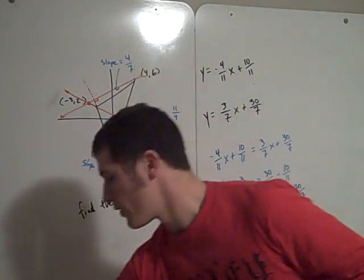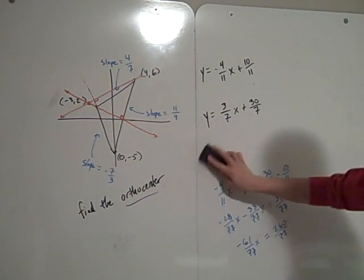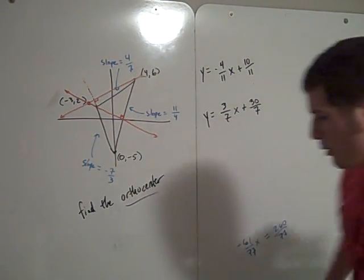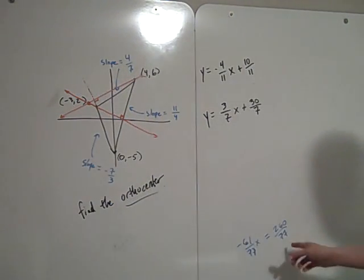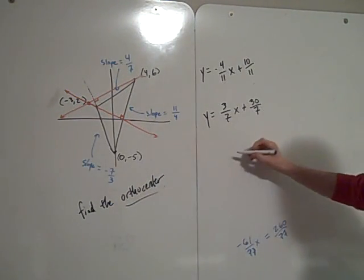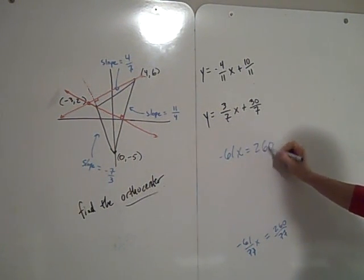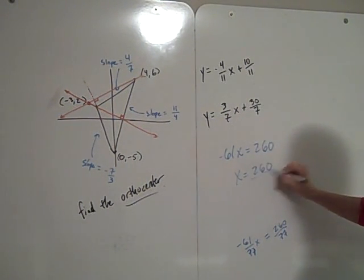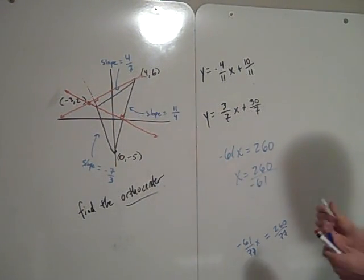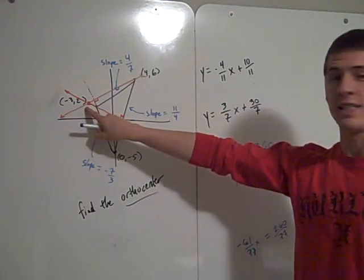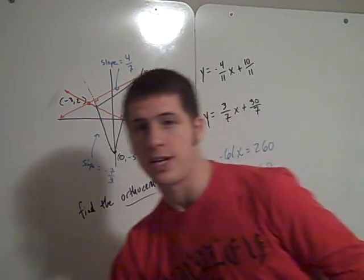To get x by itself, multiply both sides by 77, that gets rid of the denominator for us. I have negative 61x equals 260 and thus x is equal to 260 over negative 61. That's the x value. Negative 260 over 61 is the x value of the orthocenter.